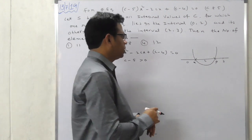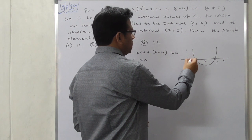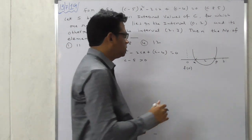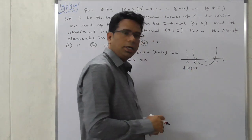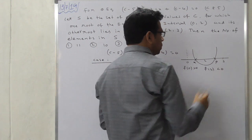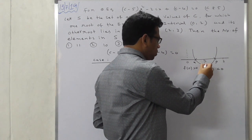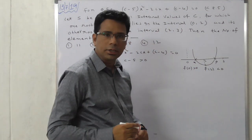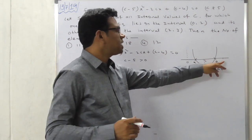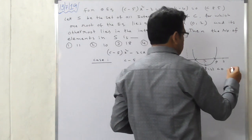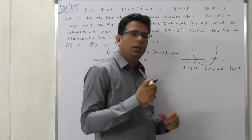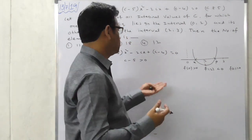Now observe the conditions from the graph. For x = 0, f(0) is positive, so f(0) > 0. What is f(2)? Since the graph is below the x-axis at x = 2, f(2) < 0. The y-value at x = 2 comes under the x-axis, so it is negative. Then f(3) goes back up, so f(3) > 0. Try to solve all these inequalities to get the answer.